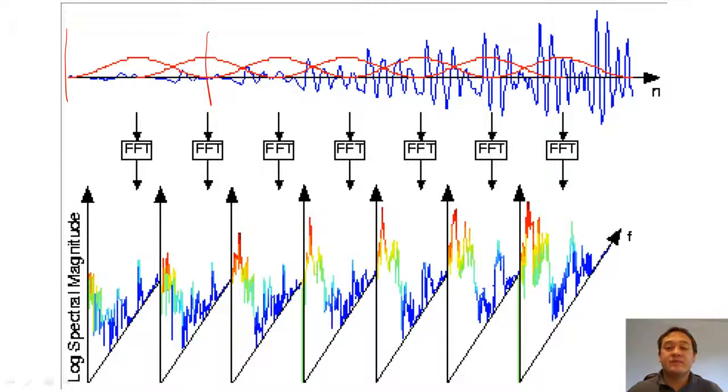When we compute the short-time Fourier transform, we apply a series of windows to the signal and take the DFT of each of these windows using a DFT algorithm called the fast Fourier transform.